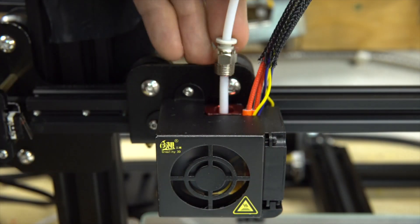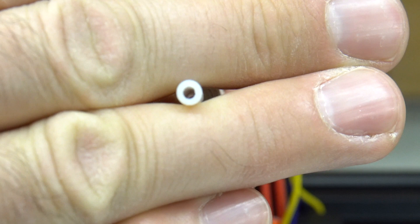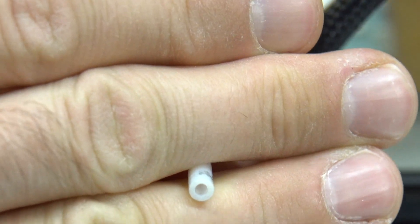Remove the Bowden tube. Look at the end. If it's sharp and clean like that, it's okay.